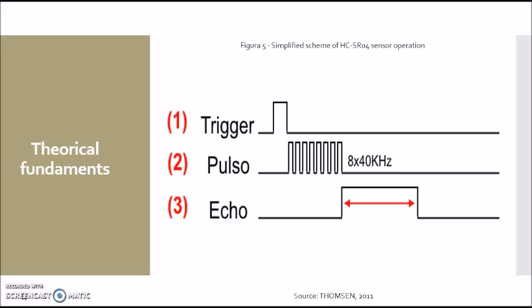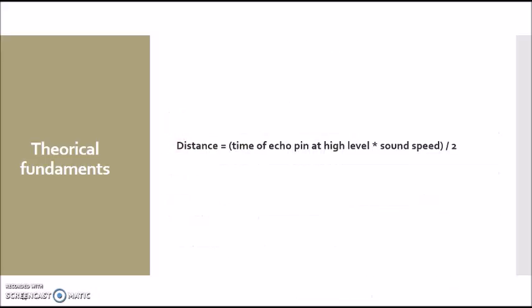A simplified schematic is shown in the figure. The time the echo pin remains at the high level is used to calculate the distance between the obstacle and the sensor by the formula in which it is multiplied by the speed of sound in air and divided by 2 due to the fact that the sensor measures the time the wave takes to go and come back. In this case, we want to get just one time, going or coming back.